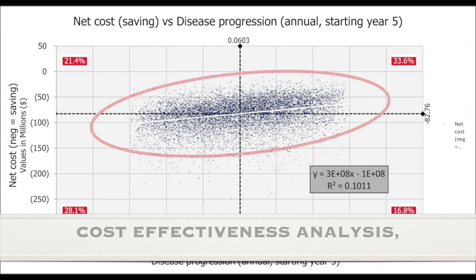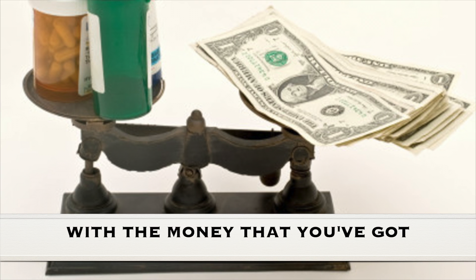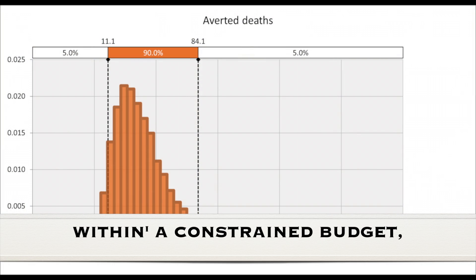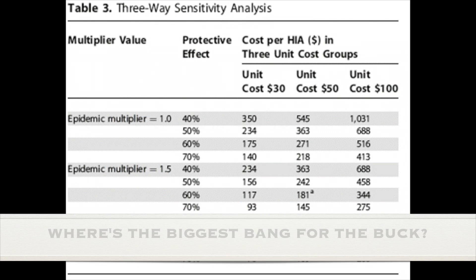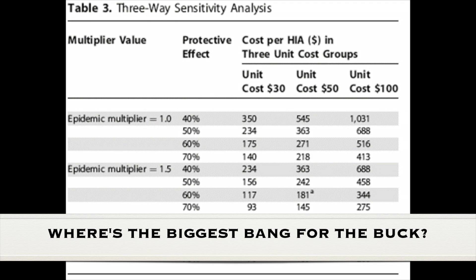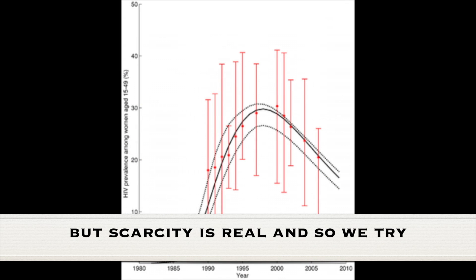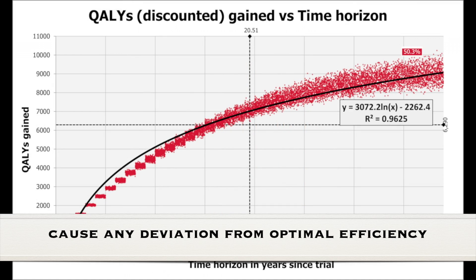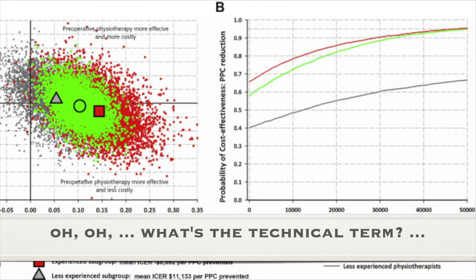Cost-effectiveness analysis is the branch of economics that aims to get the biggest impact with the money that you've got. Within a constrained budget, how do you maximize averted deaths? In other words, where's the biggest bang for the buck? If money were unlimited, none of this would matter, but scarcity is real and so we try. Any deviation from optimal efficiency unfortunately means that people die.